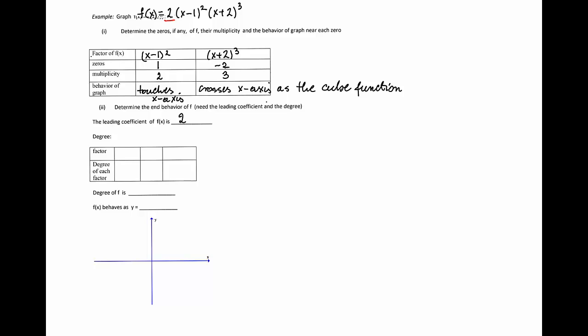As for the degree, we'll list each factor and determine the degree of each factor, then determine the total degree of this polynomial. Degree of the factor 2 is 0, degree of x minus 1 squared is 2, and degree of x plus 2 cubed is 3. So the total degree is 0 plus 2 plus 3, which is 5.